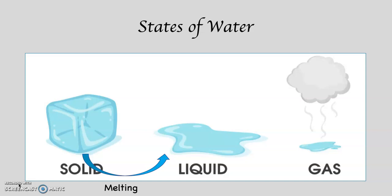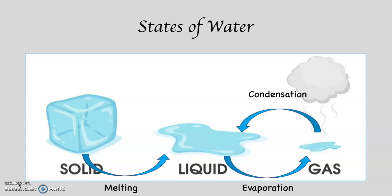As you're aware, water comes in three states of matter: solid, liquid, and gas. Water can change from a solid to a liquid — the scientific process for that is called melting. When water goes from a liquid to a gas, the process is called evaporation. When water goes from a gas to a liquid, that is called condensation. And when water goes from a liquid to a solid, we call that freezing — that is the actual scientific term for it.